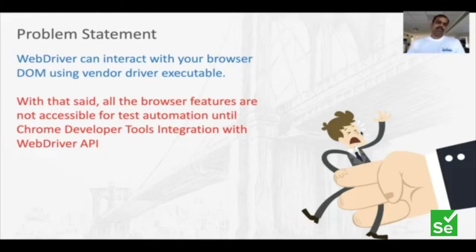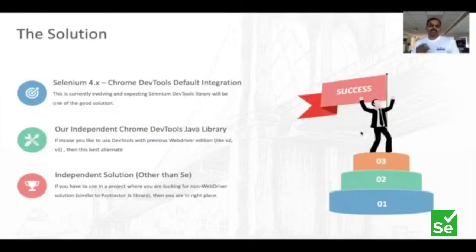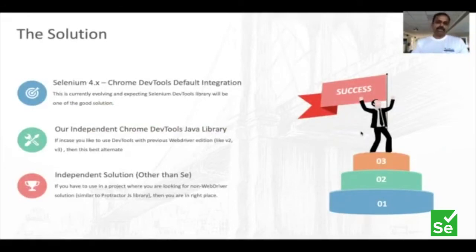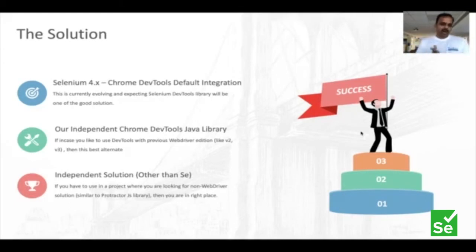Now, Chrome Developer Tools gives you a lot of options to integrate. Let's see how we merge both of them and make it work. Before I show you some demos, I just want to set the context. If you really follow Selenium 4.0, you would have noticed that the Chrome Developer Tools is already in the pipeline — it has been built. Simon is doing a lot of effort building this entire library. However, this is still evolving, and there are a few more implementations yet to happen.